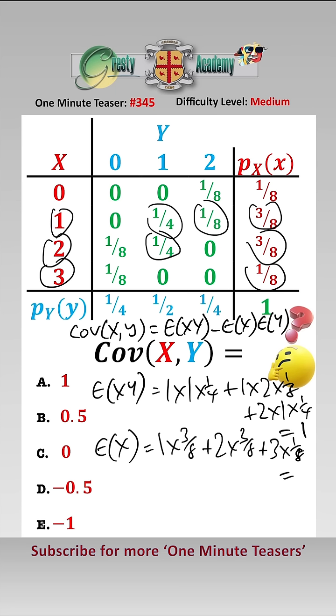And that equals 1.5. And then the expected value of Y, we look at the blue bits. And that equals 1 times a half, add 2 times a quarter, which equals 1.